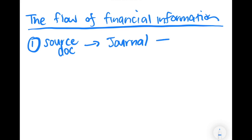From the journal, this information then gets posted to the ledger — specifically the general ledger. The nice thing about the general ledger is that we have all of our different accounts and we can keep track of the amounts sitting in each account at any particular point in time.